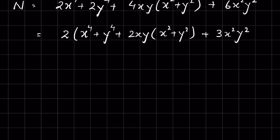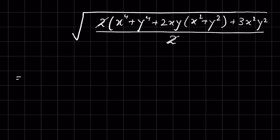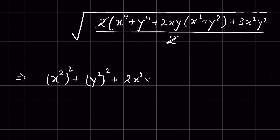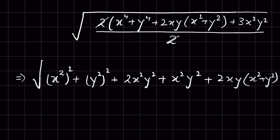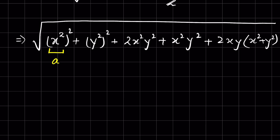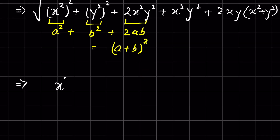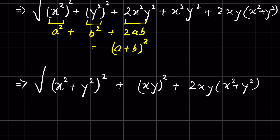Dividing by 2 cancels the factor of 2. We now have x⁴ plus y⁴ plus 3x²y², which we rewrite as (x²)² plus (y²)² plus 2x²y² plus x²y² plus 2xy(x² plus y²), all under the square root. Taking a equals x² and b equals y², this matches the form a² plus b² plus 2ab, which equals (a plus b)², giving (x² plus y²)² plus (xy)² plus 2xy(x² plus y²).